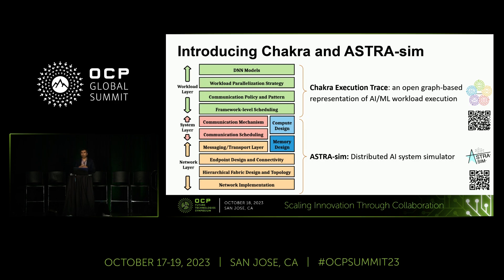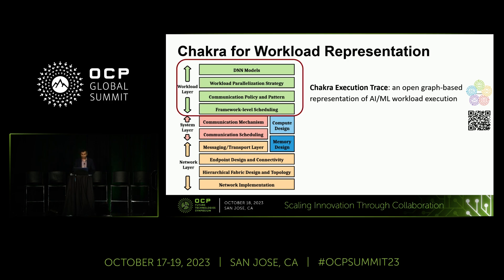In order to navigate this design space, I'm going to talk about two pieces of the ecosystem we've been developing. The first is Chakra, which focuses on the workload layer, and the second is AstroSim, which is a distributed multi-fidelity AI system simulator.